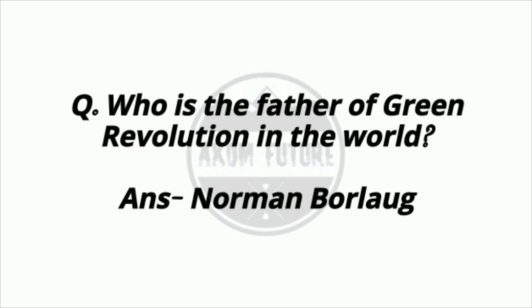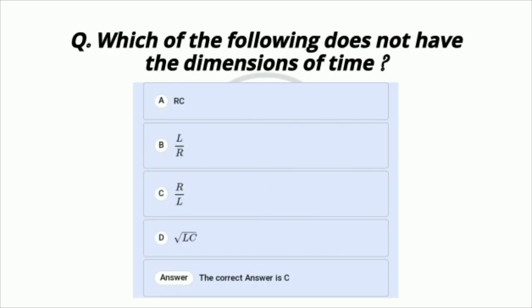Question 17: Who is the father of the Green Revolution in the world? Question 18: Which of the following does not have the dimension of time? The answer is option C, R by L.